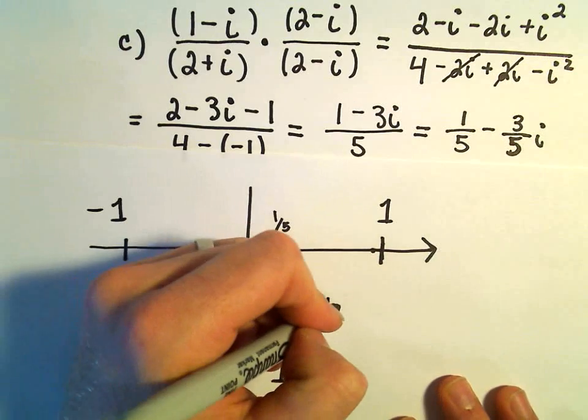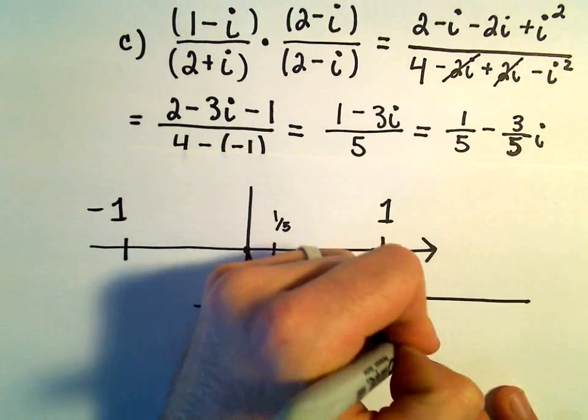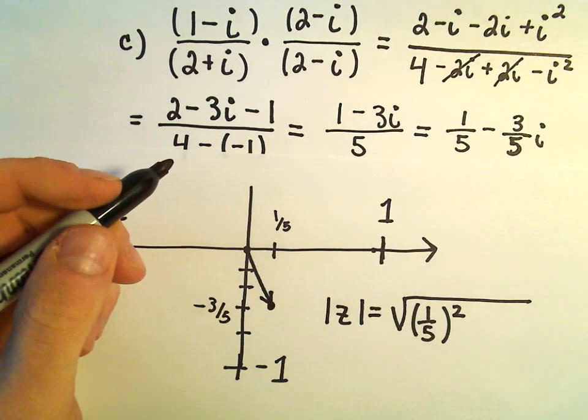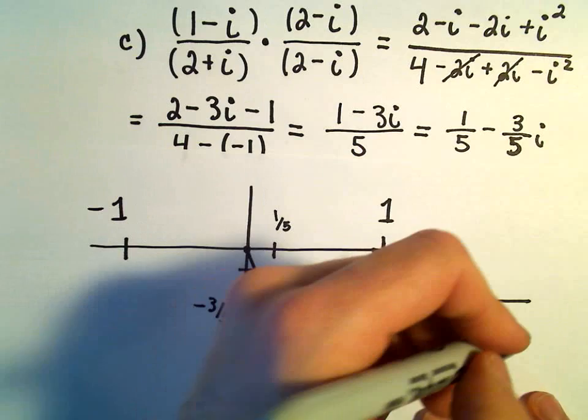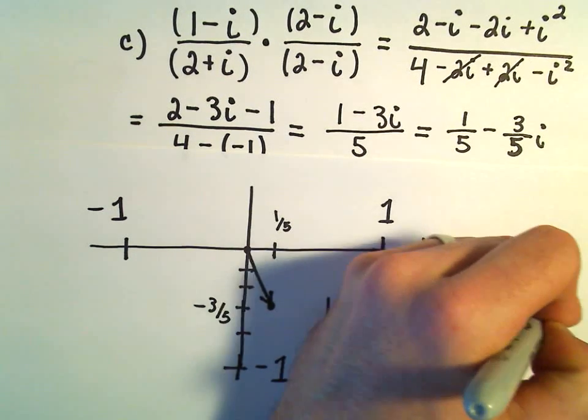To find the modulus, again, to find the modulus, we just take each component, the real part and the imaginary part and square it, so plus negative 3 fifths squared.